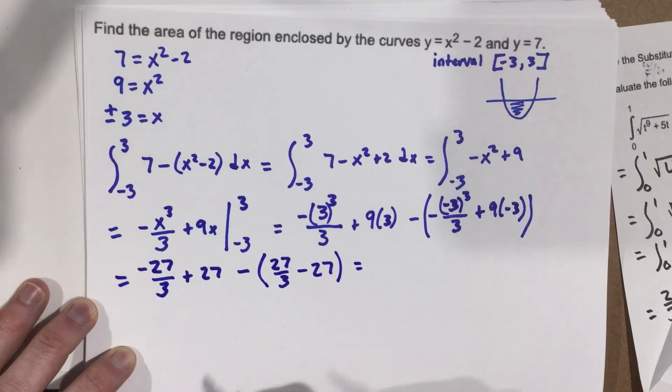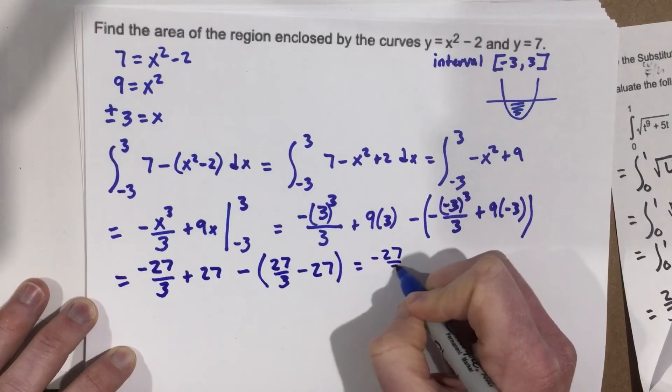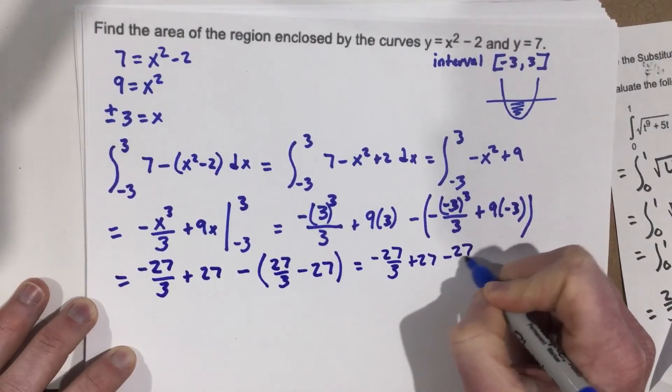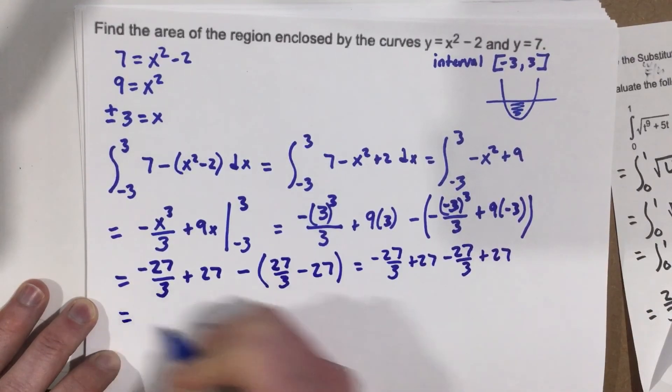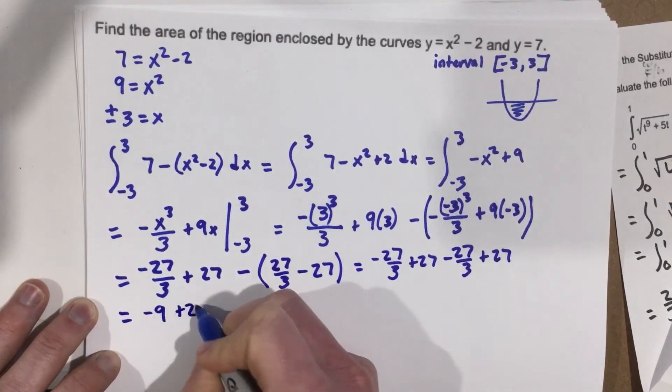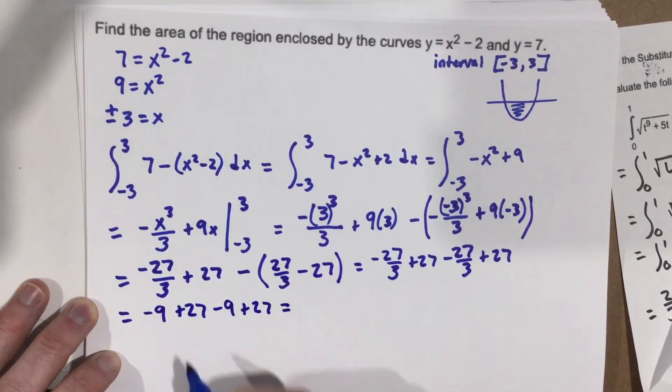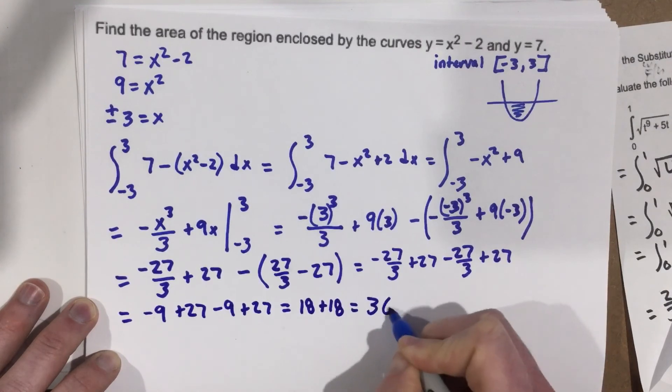So then we're going to distribute this negative. And we're going to get negative 27 over 3 plus 27 minus 27 over 3 plus 27. Now I know that the negative 27 over 3, that's negative 9 plus 27 minus 9 plus 27. So this is going to give me 18 and 18, which is 36.